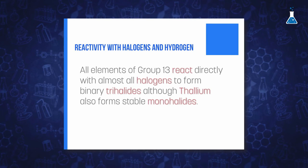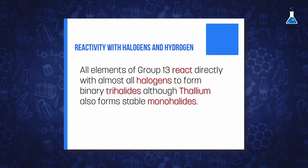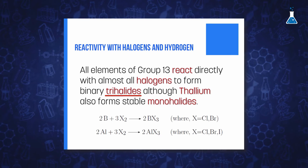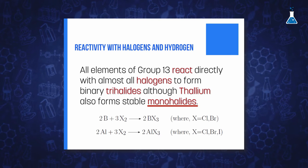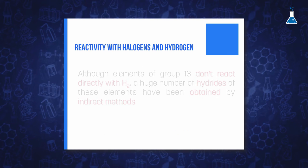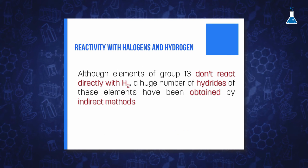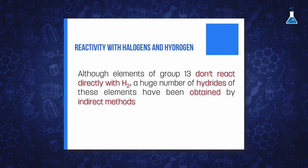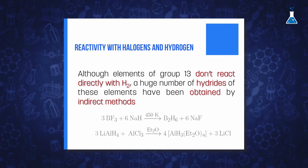All the elements react with halogens to form the corresponding trihalides, although thallium also forms thallium(I) halides. Even though they don't combine directly with hydrogen, a large number of hydrides of these elements have been obtained by indirect methods.